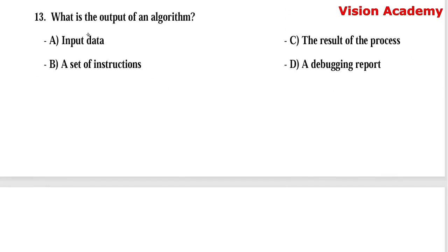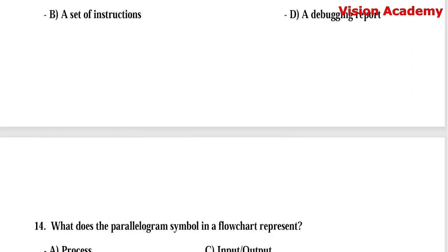Question number 13: What is the output of an algorithm? Option A, input data. Option B, set of instructions. Option C, the result of the process. Option D, debugging report. Here, option C, the result of the process, is the right answer.